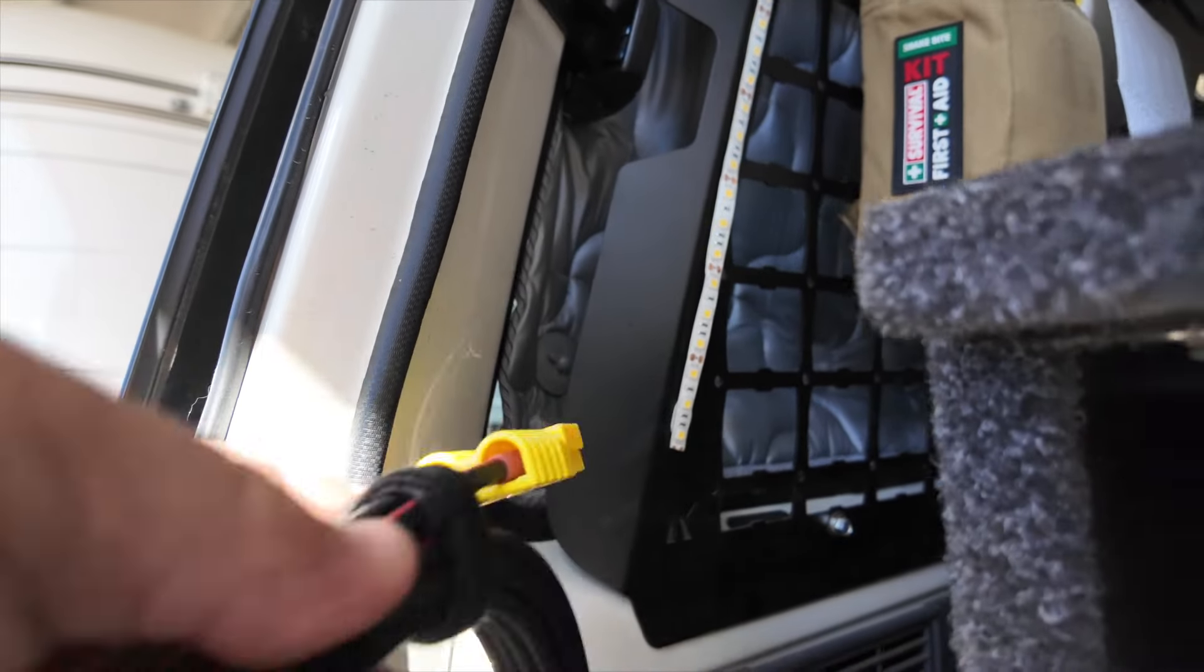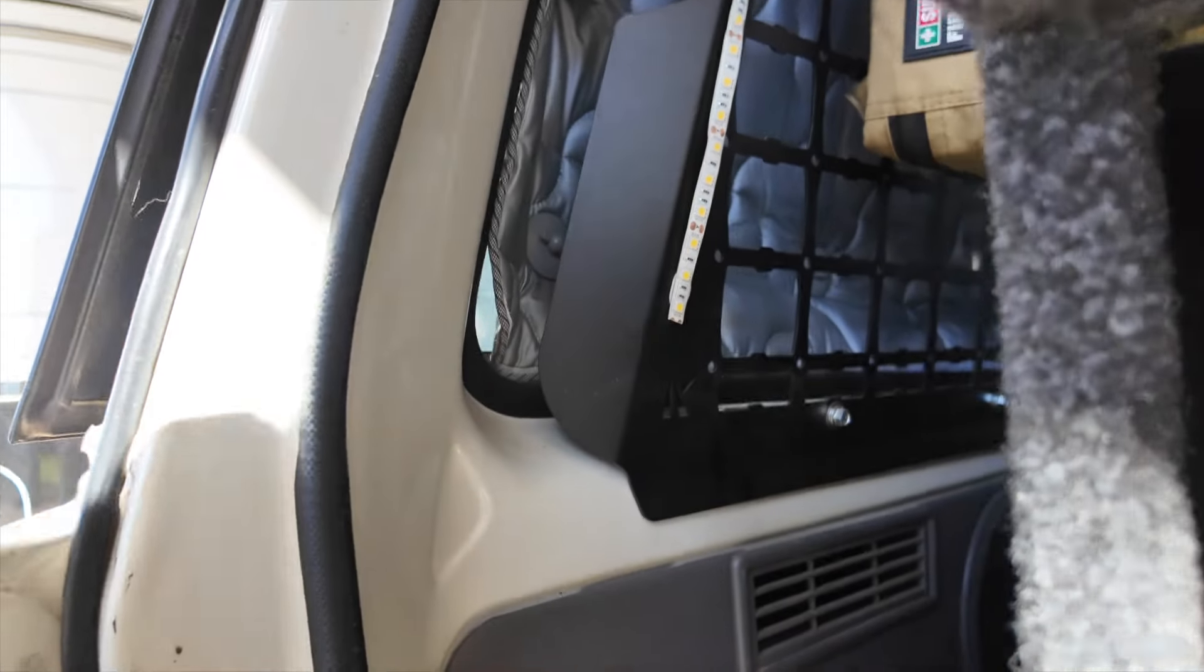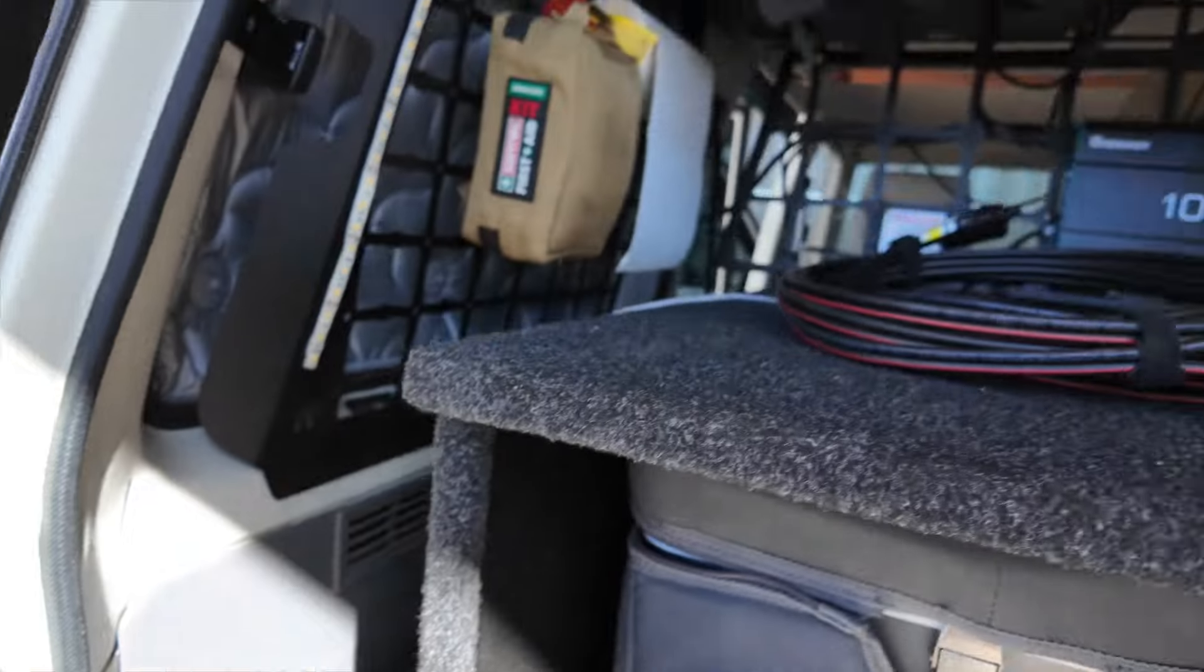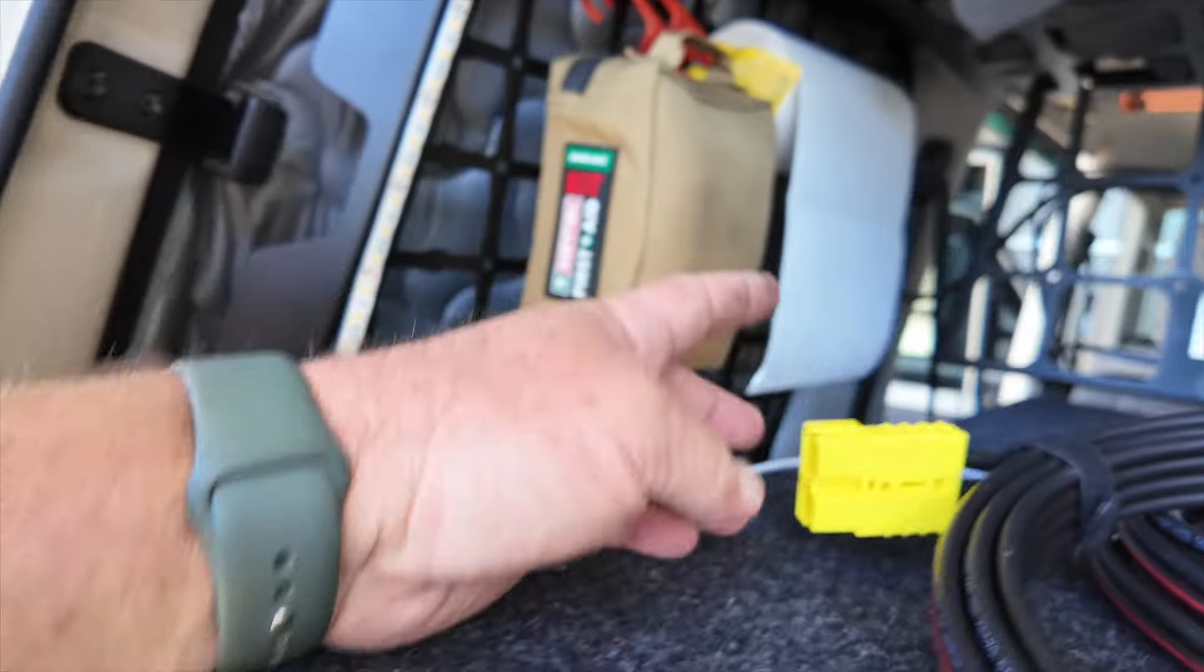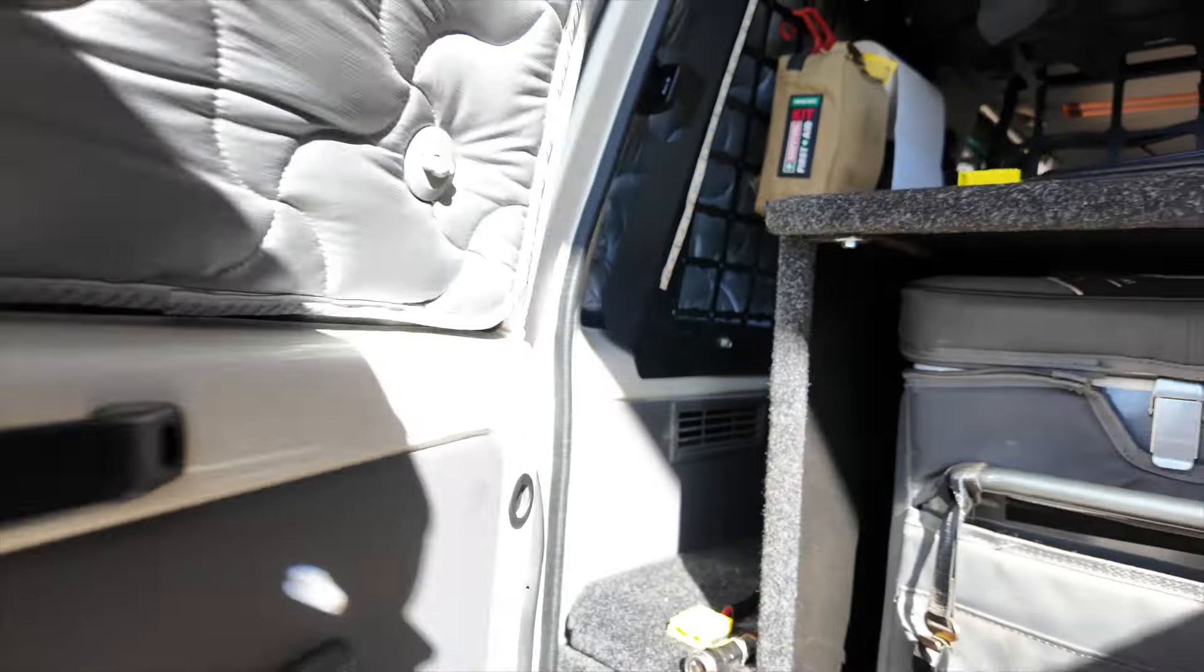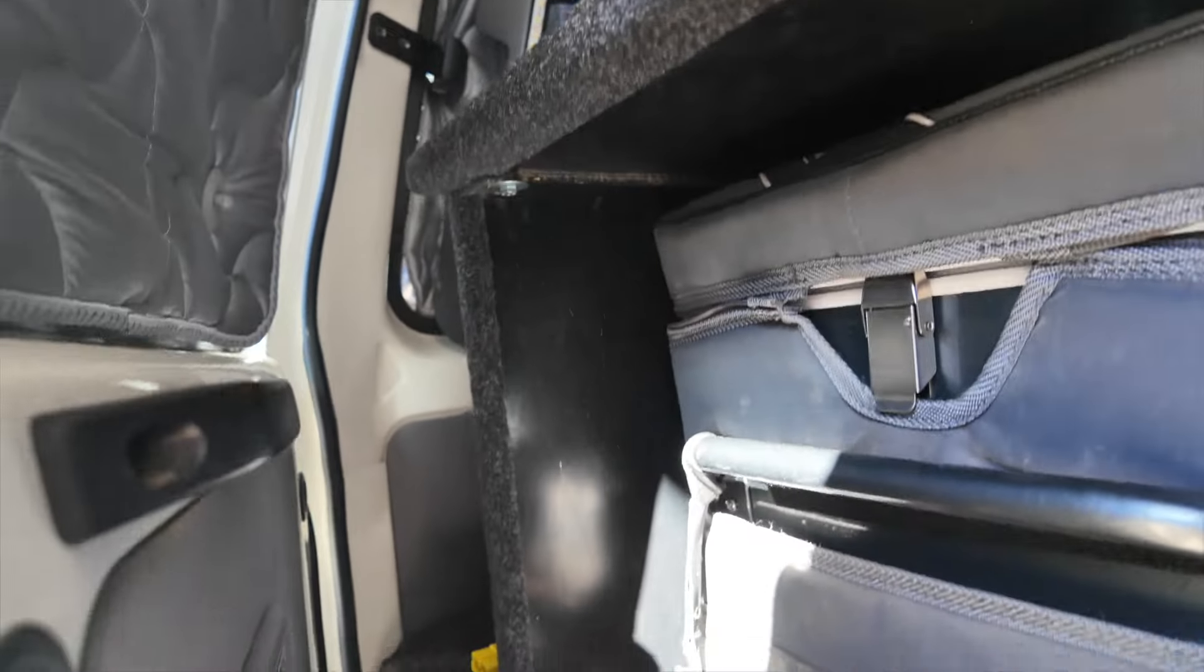So whilst I'm camping I can just run the lead that these guys have made up, Roller Solar have made up this lead here, and I'll be able to run that lead through that window and plug it into there, and that'll charge the batteries whilst I'm at camp. Enough room there now that I can have this cable here plugged into this, run through there, and still have all the doors closed up. There's plenty of room there to do just that.